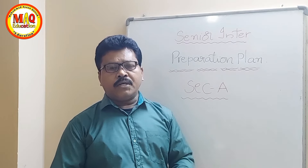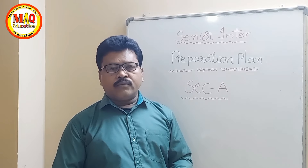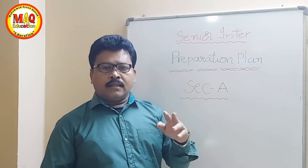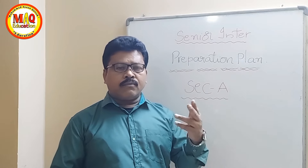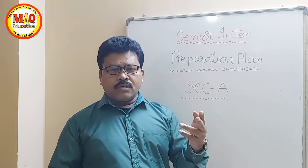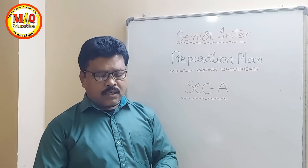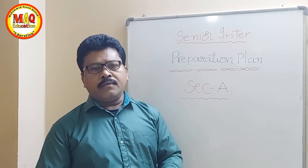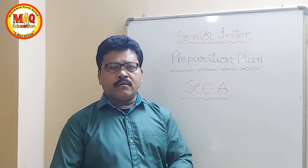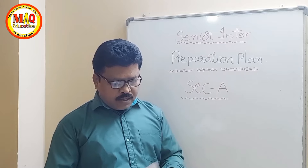In Section A, you have annotations and question answers. Out of three annotations, two we have to write — first prose, then poetry. The third question is paragraph questions from prose, out of three two; number four is paragraph questions from poetry, out of three two; number five is short stories, out of three two. So totally ten questions are there — ten fours — 40 marks. Section A carries 40 marks.